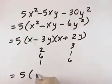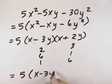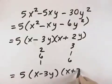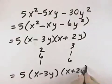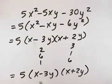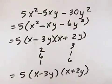That means the completely factored answer is 5 times the quantity (x minus 3y) times the quantity (x plus 2y). Those would be the three factors. You could have those factors in a different order, but those are the three final factors when you completely factor this expression.